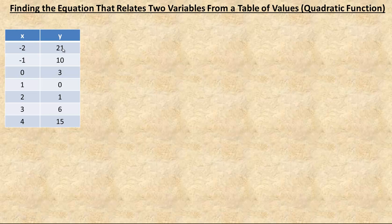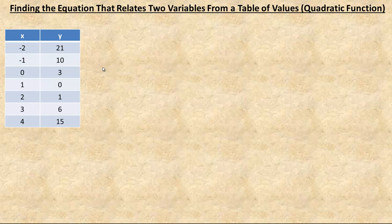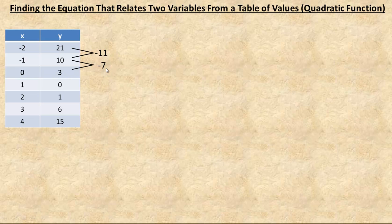Find the differences between the successive y values. For example, from 21 down to 10, what's the change? What you would actually do — this is the actual calculation — you would punch into your calculator the 10 and subtract the 21 from it. So it's a change of negative 11. The next one would go 3, take away the 10, which is a difference of negative 7. So it's the bottom number minus the one above it — that's how you calculate the differences. To go from 21 down to 10 is a change of negative 11; the negative means it's gone down. 10 down to 3 is a change of negative 7.